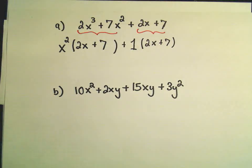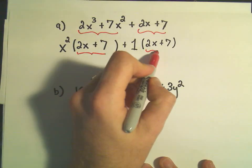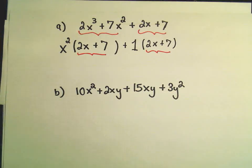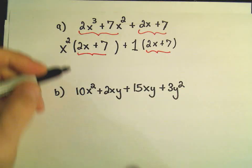And now this is where, this is kind of the thing to recognize, is notice that the thing in the parentheses, in both sets of parentheses, is the same. You have a 2x plus 7 and a 2x plus 7.